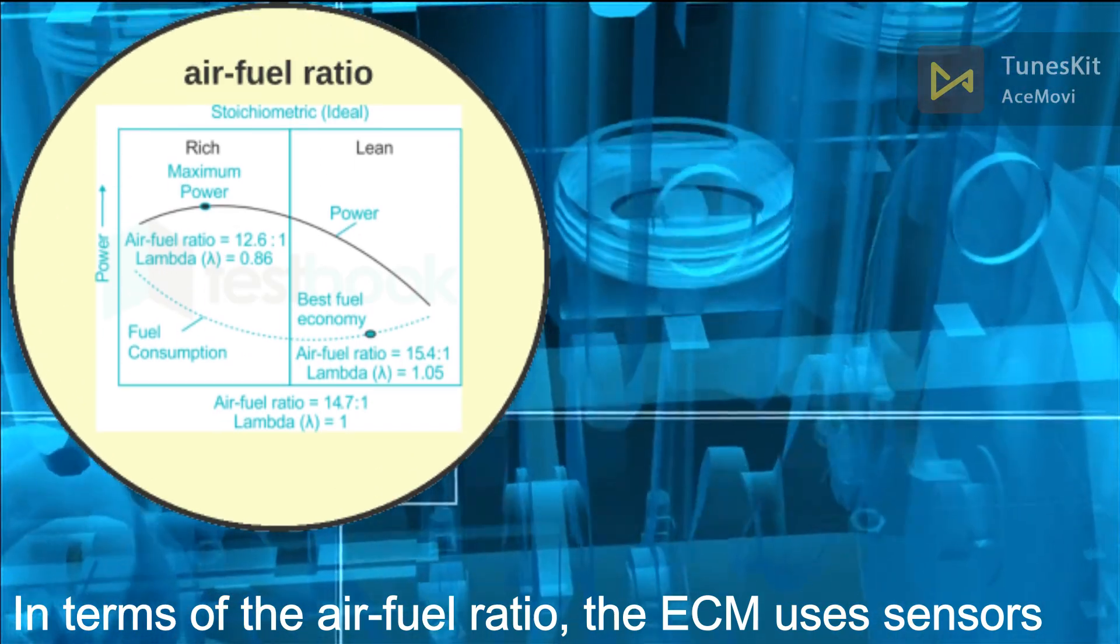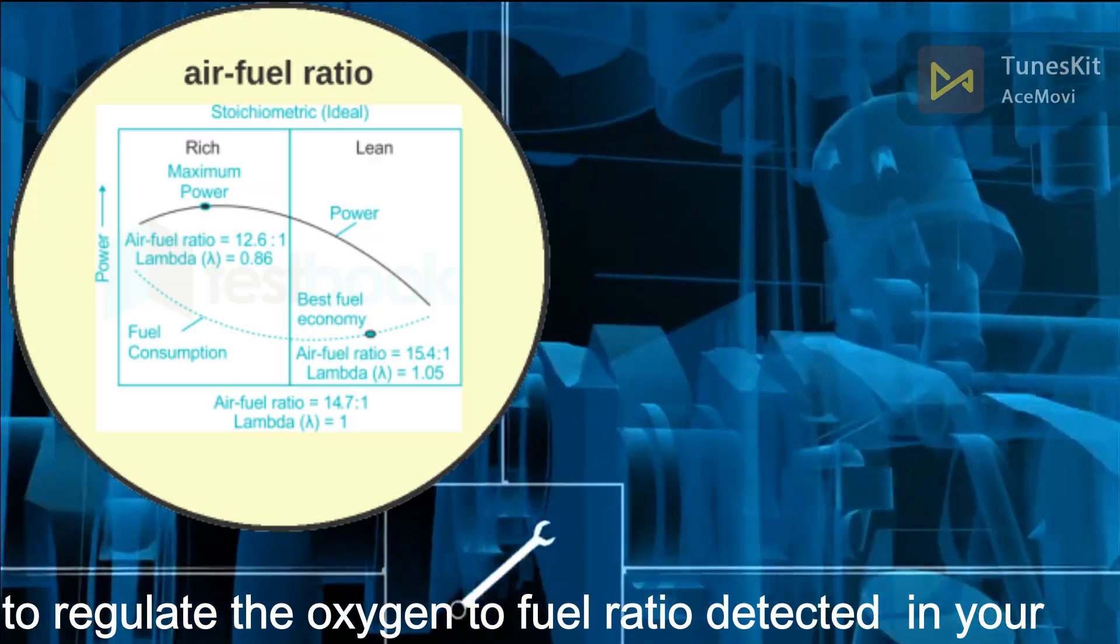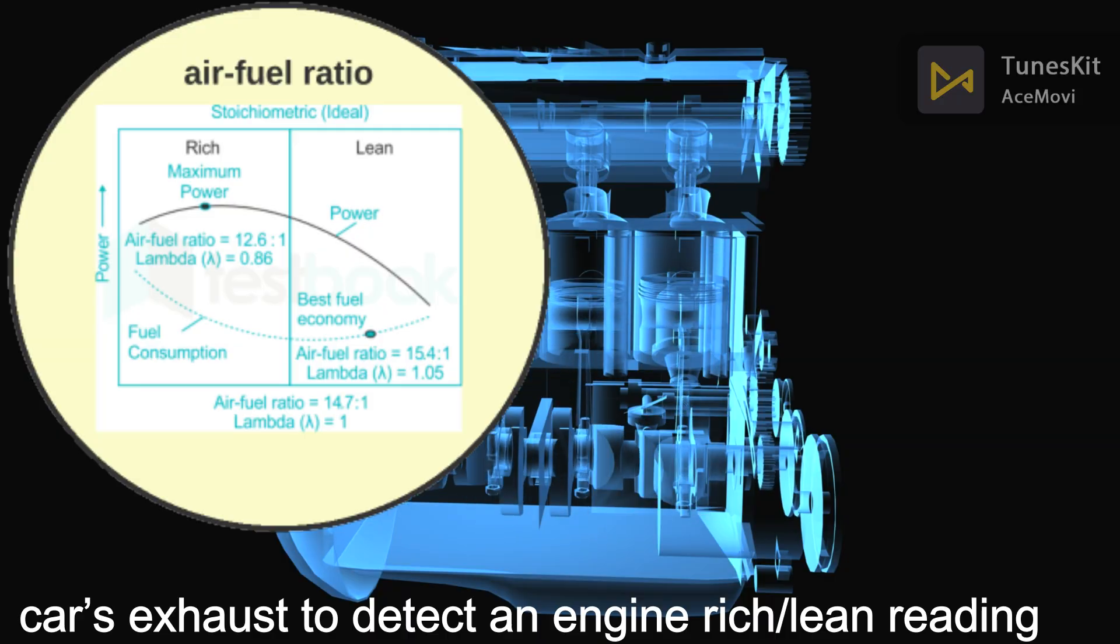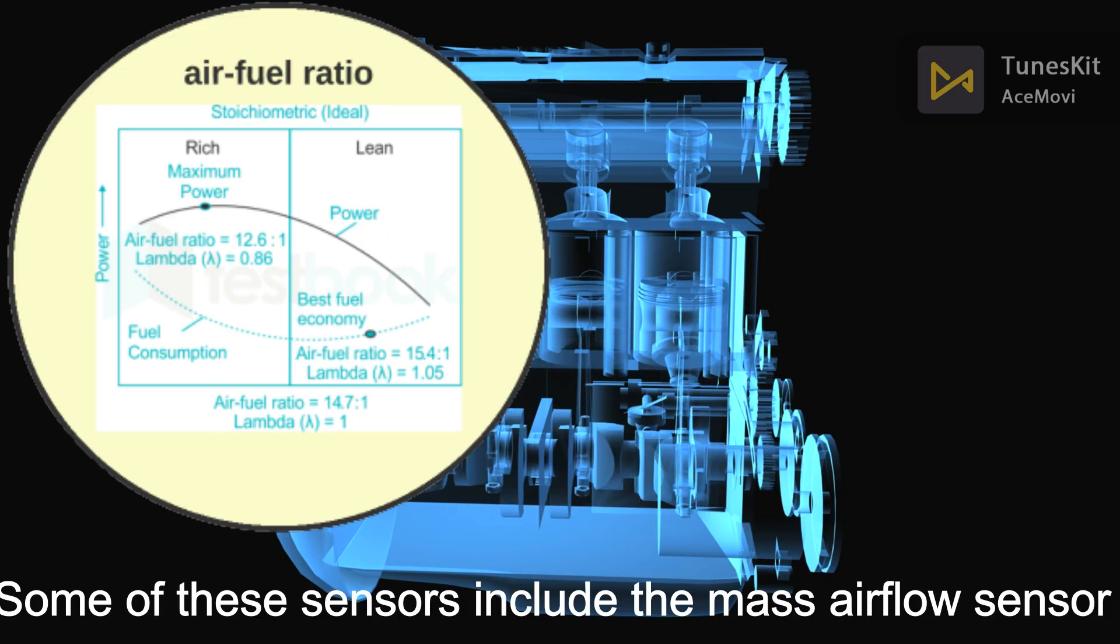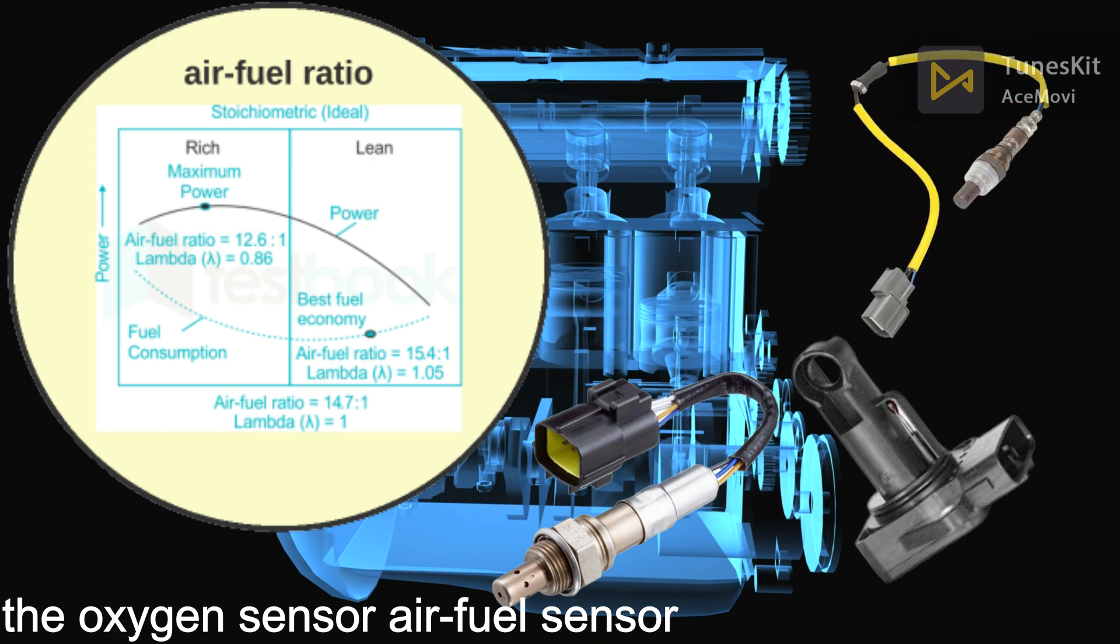In terms of the air-fuel ratio, the ECM uses sensors to regulate the oxygen to fuel ratio detected in your car's exhaust to detect an engine rich or lean reading. Some of these sensors include the mass airflow sensor, the oxygen sensor, and the air-fuel sensor.